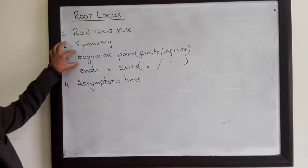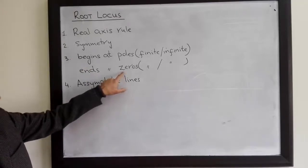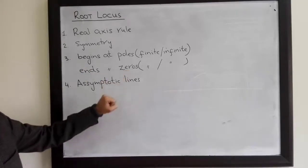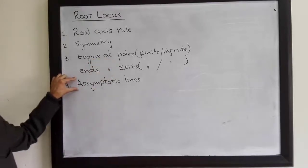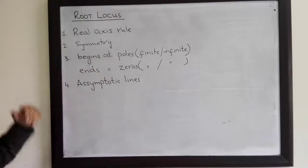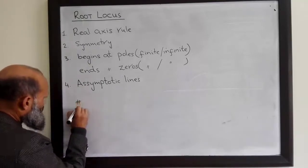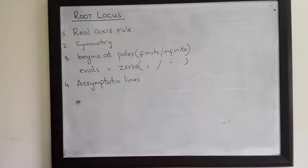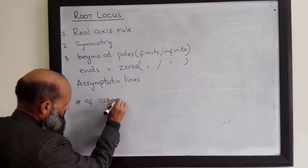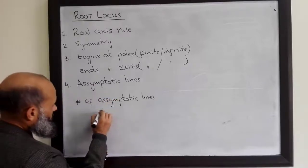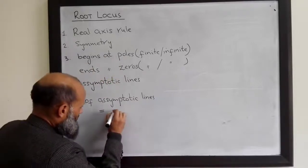Root locus starting from the poles will finally reach zeros — zeros may lie at infinity — and in approaching these zeros at infinity, the root locus will follow some asymptotic lines. The number of asymptotic lines is equal to the number of finite poles minus the number of finite zeros.